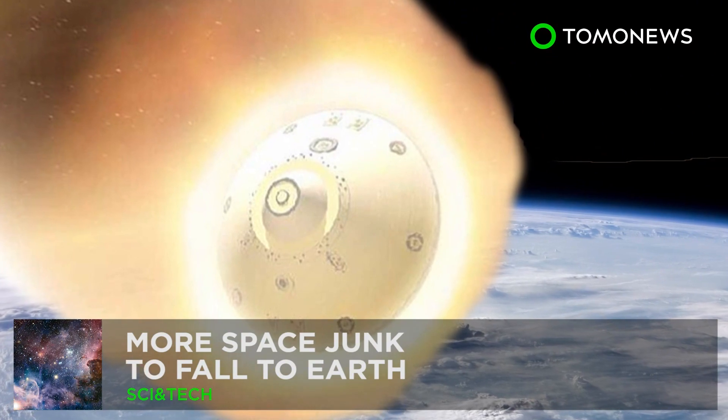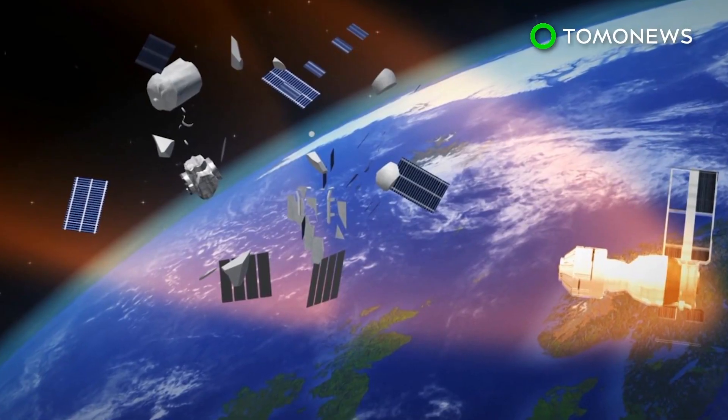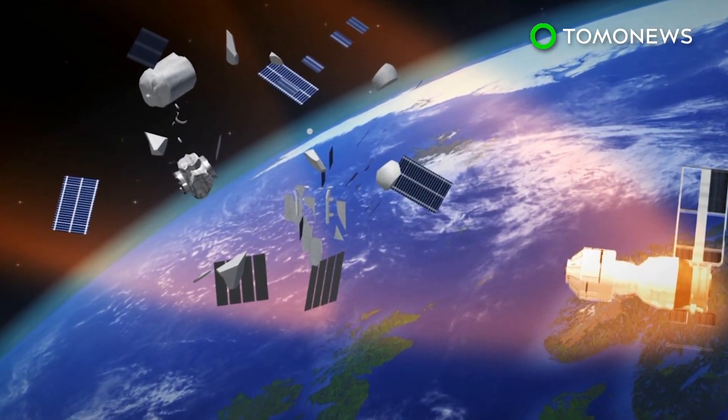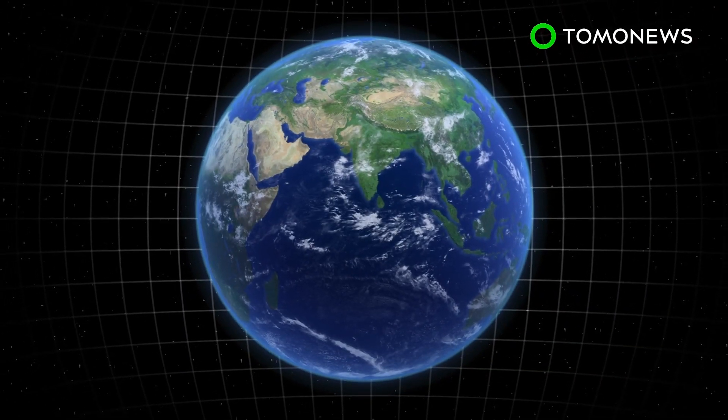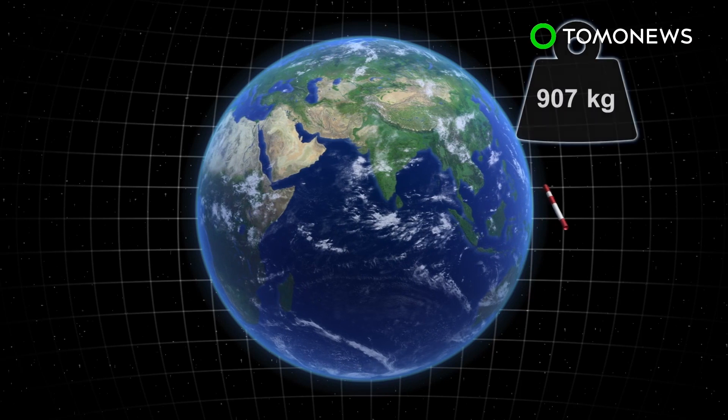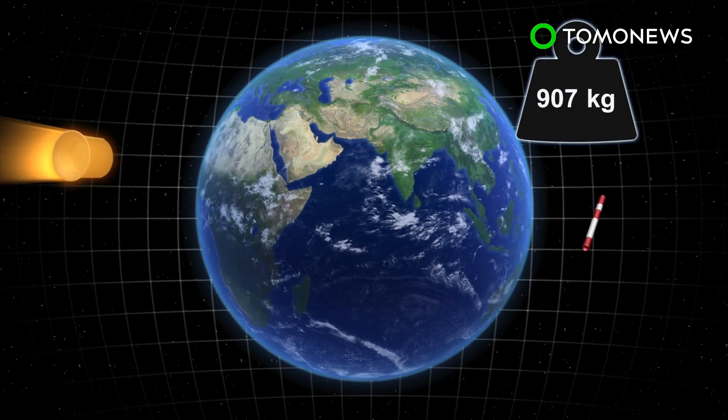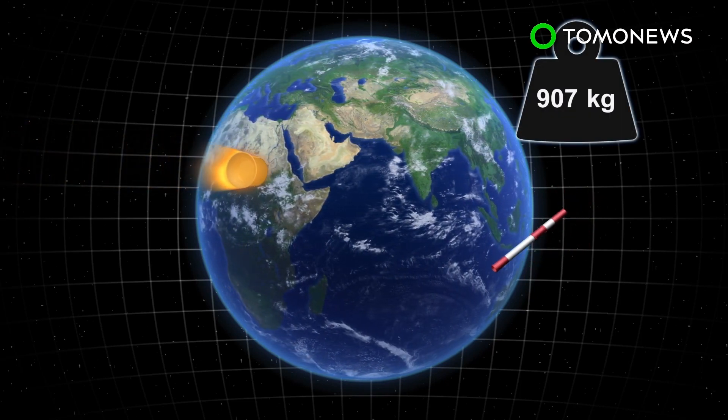More Space Junk to Fall to Earth. There's a whole lot of junk about to enter Earth's atmospheric trunk. According to Space.com, the rocket body of an Indian Polar Satellite Launch Vehicle is expected to fall to Earth around April 3rd. It weighs 907 kilograms.